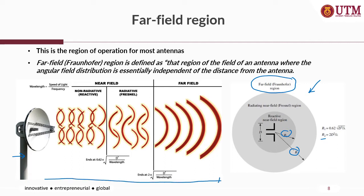The EM wave behaves differently when the distance between the antenna is varied. Antennas are usually used to transfer signals at large distances, which are considered to be in the far-field region — so this is the region of operation for most antennas.